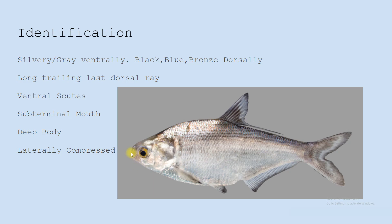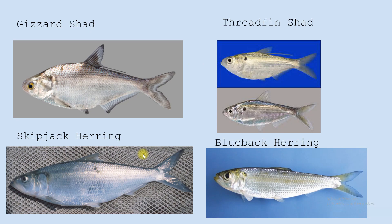That sub-terminal mouth is probably the best identification factor for the gizzard shad. Other baitfish found in the area have a terminal mouth — something they can feed in front of or above them. The gizzard shad has a sub-terminal mouth, kind of like a drum or a redfish; they have to feed down or in front of them downward.